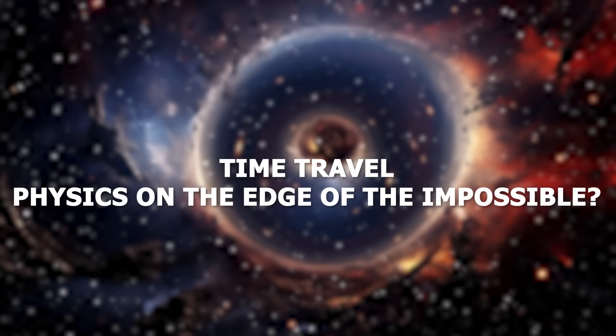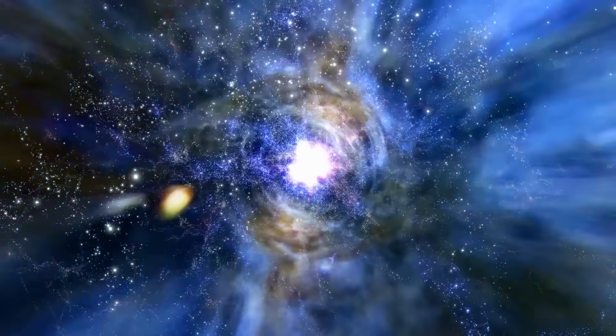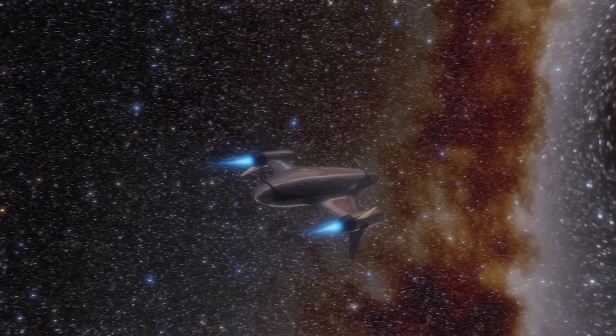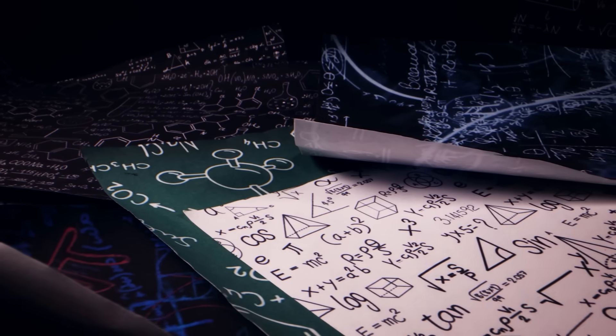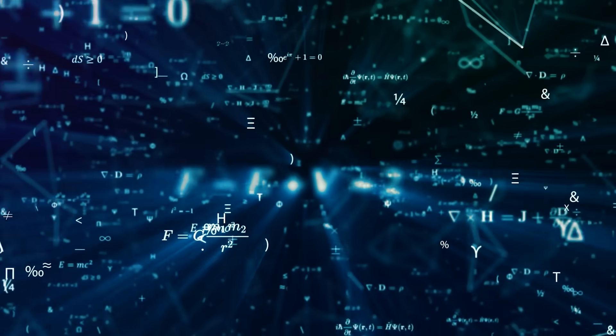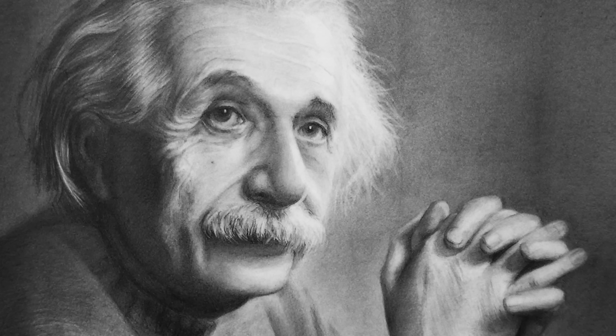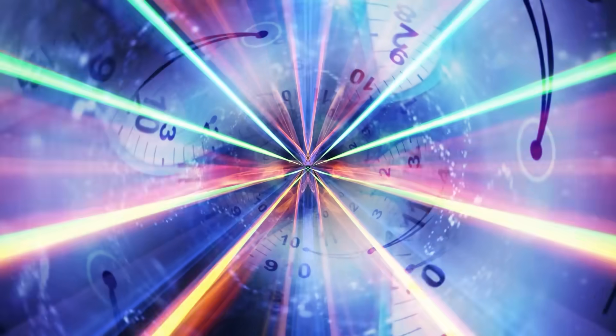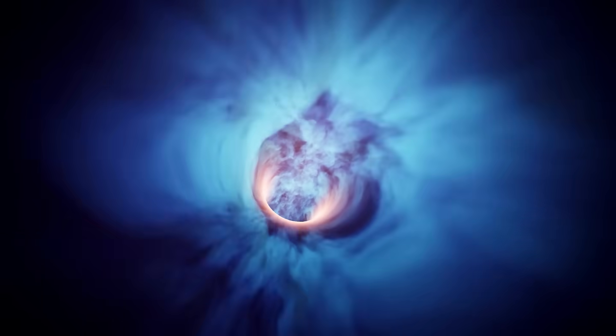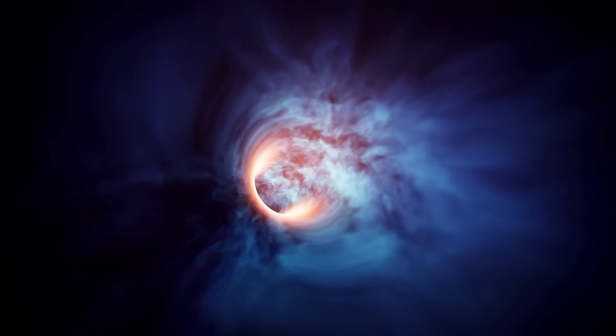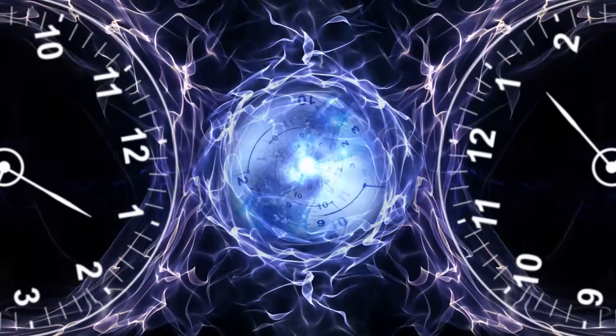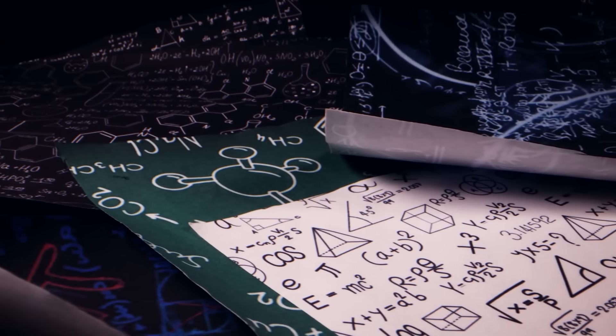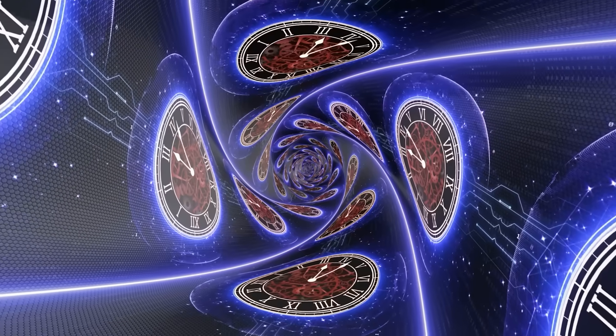Time travel. Physics on the edge of the impossible? Whether in films, books, or theories, the idea of traveling into the past or taking a look into the distant future has something appealing about it. But what does physics have to say about it? You may be surprised, but the theory almost always says yes. Einstein's theory of relativity allows, under certain conditions, ways in which time could be manipulated. Time dilation is the first step. If you accelerate one end of a wormhole or bring it into a strong gravitational field, you create a time shift between the two ends. Anyone who passes through it later could arrive at a place that lies in their own past. It sounds incredible, but it is mathematically possible. But with time travel comes paradoxes.